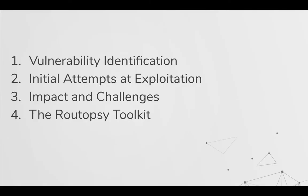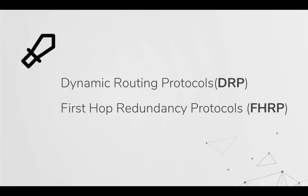We want to show you how to identify some of these network-related vulnerabilities, how our initial attempt looked at attacking some of them, what the impact was, what challenges we faced and that you may face, and how the toolkit attempts to overcome some of those challenges. We went on some pen tests and on recurring occasions we saw vulnerable DRP and FHRP protocols being multicasted into user space, which they shouldn't be. Our initial idea was to build a toolkit that would attack any network-related protocol, but for now we're focusing on these two things.